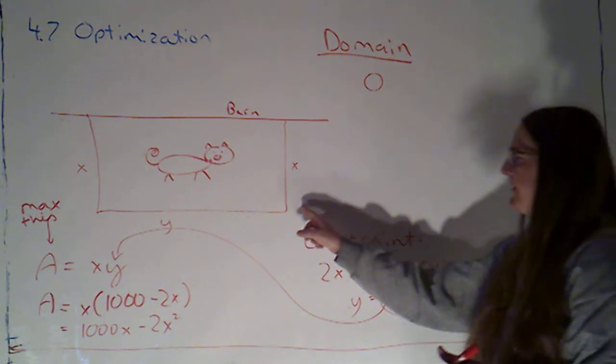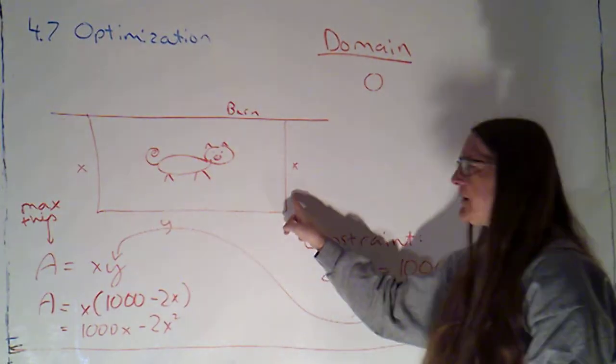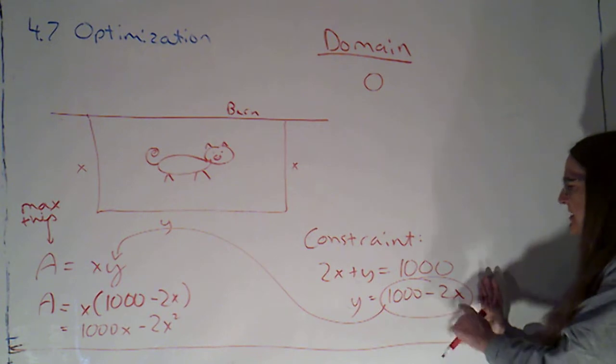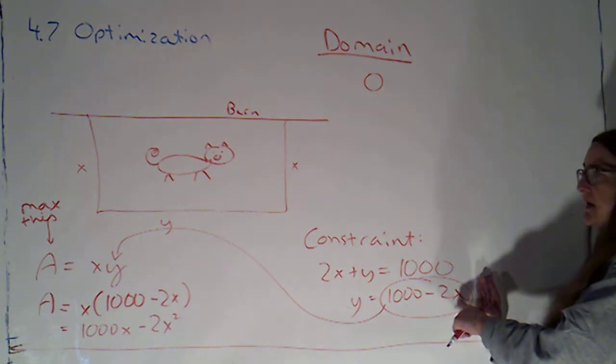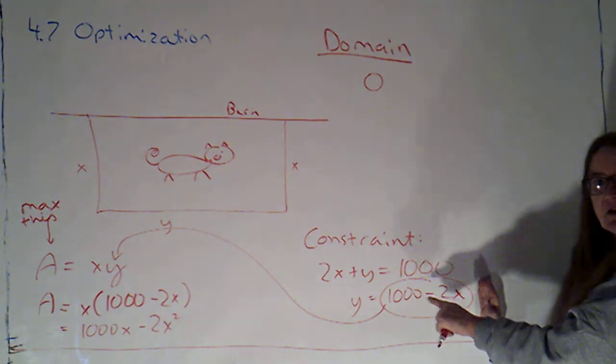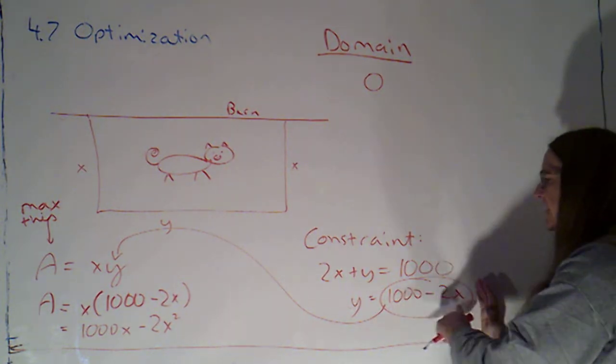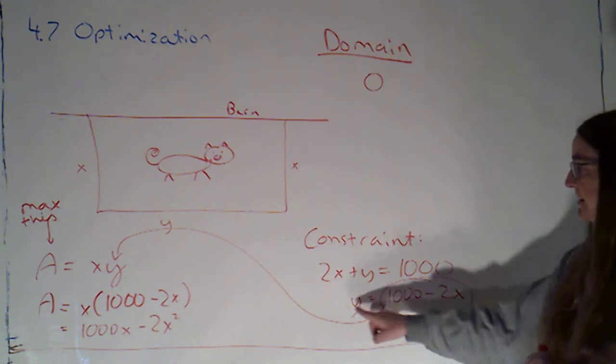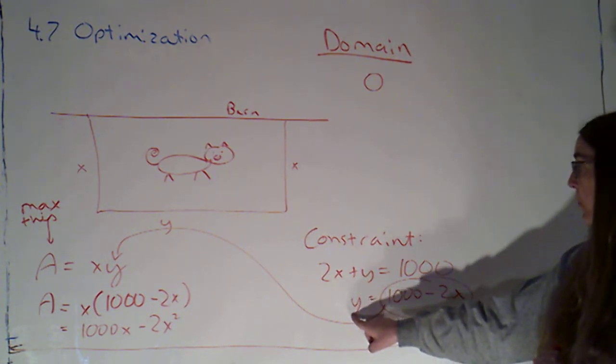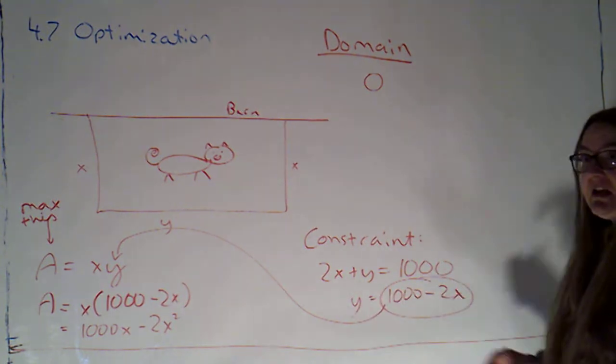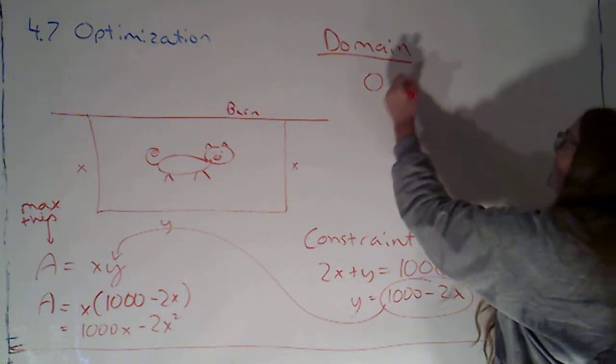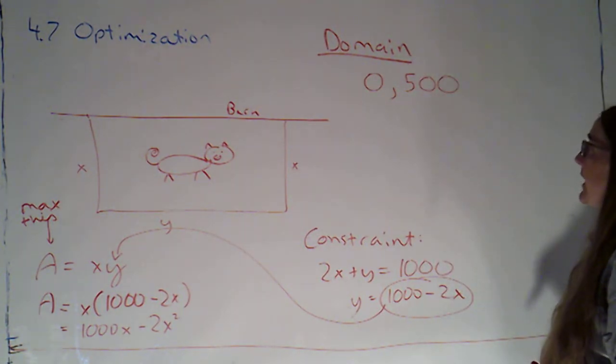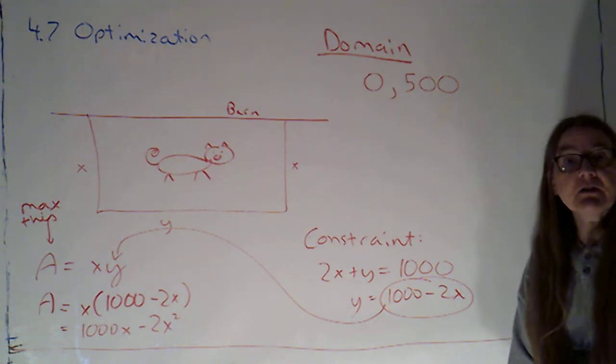And to find the biggest it could be, people might be tempted to say 1000. Use all the fencing there. But if I look at my picture, I've got to build two x's. I'm usually going to look at the constraint equation. And I'm going to say, what's the biggest that x could be, with x and y both being non-negative, because they're amounts of fencing, that would make the constraint equation true? And the biggest that x could be is if y is at its smallest. If y is zero, 1000 would have to equal two x, so x would have to be 500. My interval is going to go from zero to 500.